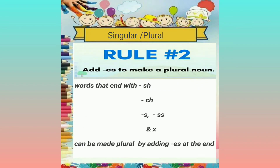Now we shall have a look at Rule 2. Rule 2 is to add ES at the end of the noun to make it plural. It's simple — just add ES at the end to get the plural. But we should remember which words we can add ES to. Words that end with SH, CH, S, SS, and X — these words can be made plural by adding ES at the end.